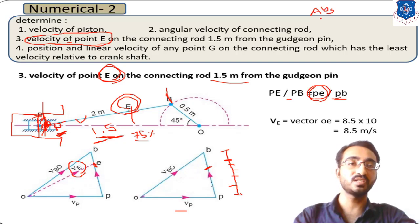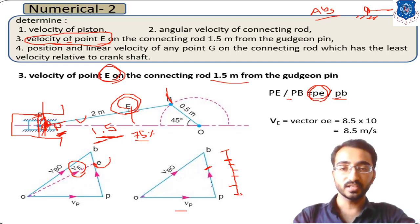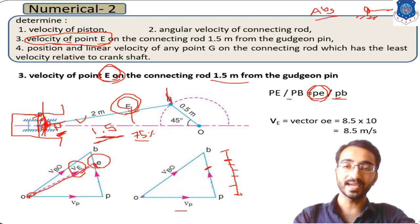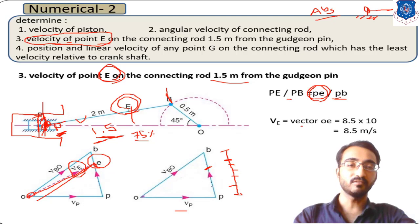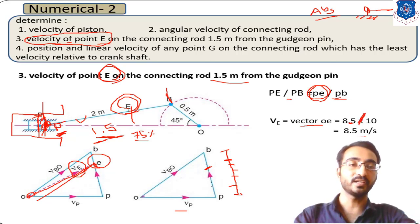Absolute velocity is the velocity measured with reference to a fixed point. Here, the velocity of point E is measured with reference to the fixed point O. The vector OE, the line joining O to E on the velocity diagram, represents the absolute velocity of E. If this length measures 85 mm, then dividing by the scale factor of 10 gives 8.5 meter per second.